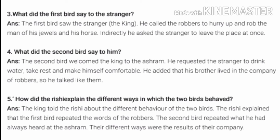Question No. 4: What did the second bird say to him? The answer is: the second bird welcomed the king to the ashram. He requested the stranger to drink water, take rest and make himself comfortable. He added that his brother lived in the company of robbers, so he talked like them.